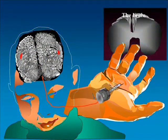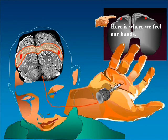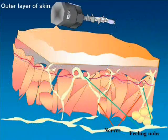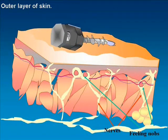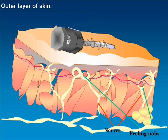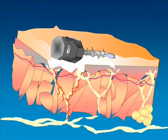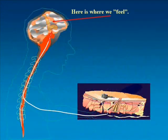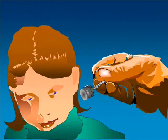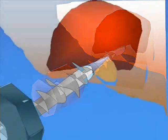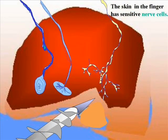The brain. Here is where we feel our hands. Outer layer of skin. Nerve feeling knobs. Here is where we feel. The skin in the finger has sensitive nerve cells.